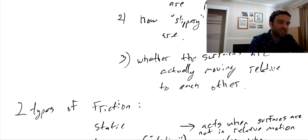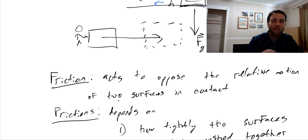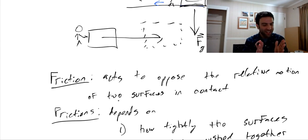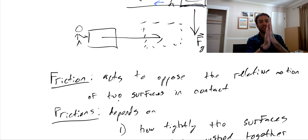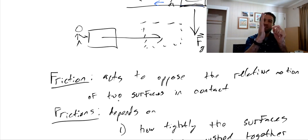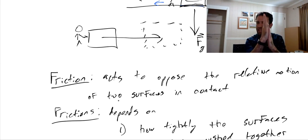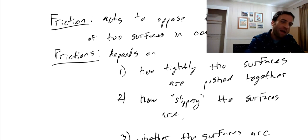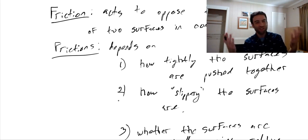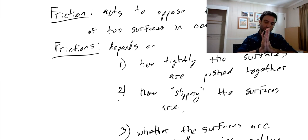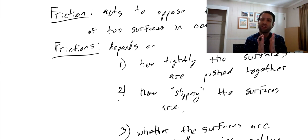So that's a little exploration of what friction depends on and how it behaves. It always points in a direction that opposes relative motion of two surfaces. The magnitude of friction depends on how much the surfaces are pressed together, how slippery they are, and whether they've already started moving relative to each other.